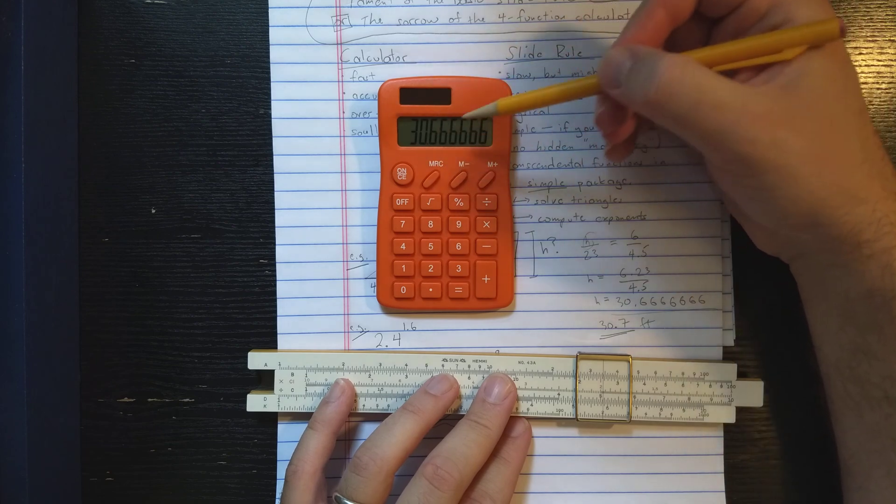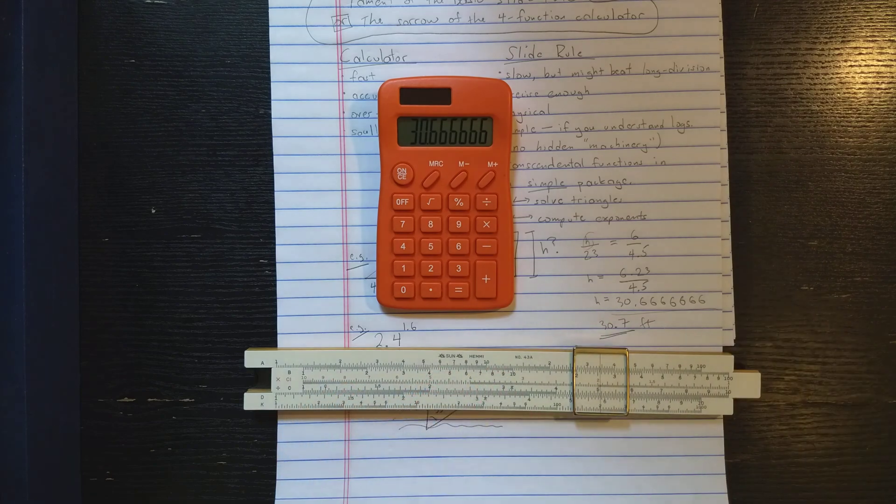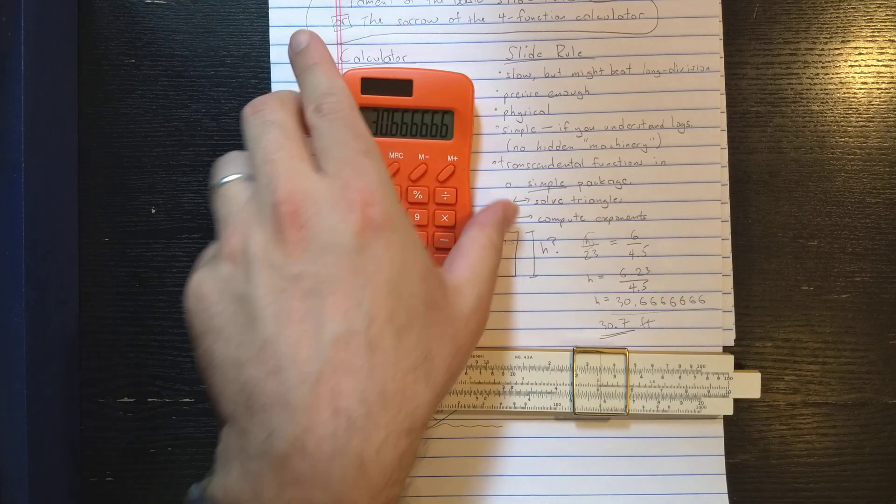Whereas probably only the first three, maybe even two, numbers here really have some significance because of our actual measurements, right?